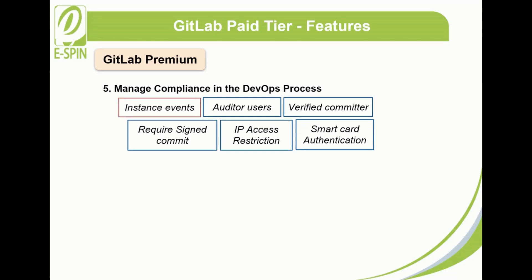Instance events: server-wide audit logging introduces the ability to observe user actions across the entire GitLab server instance, making it easy to understand who changed what and when. Auditor users offer read-only access to all projects, groups, and other resources on the GitLab instance. Verified committer ensures only authorized and verified team members are allowed to commit. Require signed commits enforces policy to require signed commits from contributors. IP access restriction enables granular access controls by IP address. Smart card authentication simplifies the log-on process via smart card.